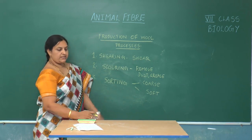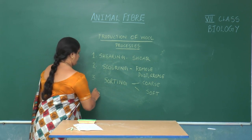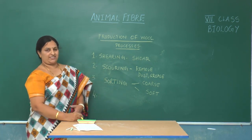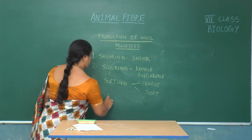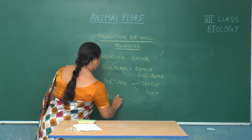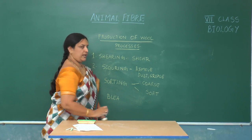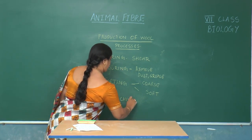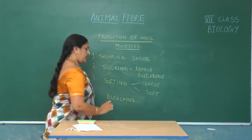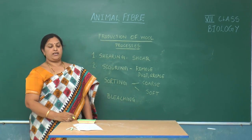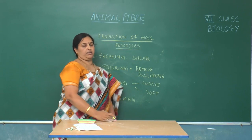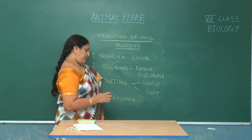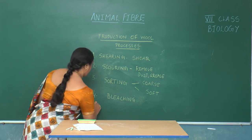After sorting, these hairs are subjected to the next step, that is bleaching, where they are made colourless with the help of chemicals. After bleaching, they are added with different permanent colours, and that step is known as dyeing.